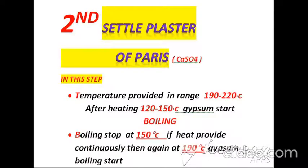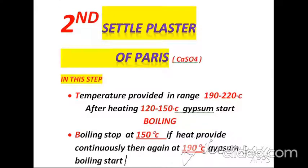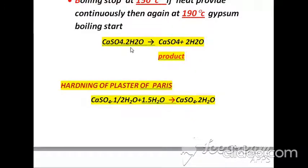The second type is second-settle Plaster of Paris. In this step, temperature is provided in the range of 190 to 220 degrees centigrade. After heating from 120 to 150 degrees centigrade, gypsum starts boiling, and boiling stops at 150 degrees centigrade. If heat is provided continuously, then boiling starts again at 190 degrees centigrade. After that boiling, we obtain CaSO4, which is second-settle Plaster of Paris. In this product, no molecules of water are attached. If we add water to this product, we again get CaSO4·2H2O, which is gypsum.